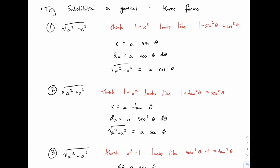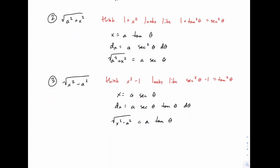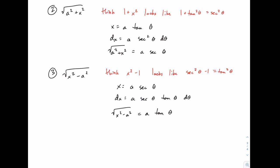And then lastly, if you have x squared minus a constant, think about how that looks like x squared minus 1, or how it looks like secant squared minus 1, which equals tangent squared, which is your hint that x should be secant of theta, which means dx will be secant times tangent, of course with the a in front of it if necessary, and then the square root will all simplify to a times the tangent of theta. Again, through the use of this Pythagorean identity right here, this version of it.